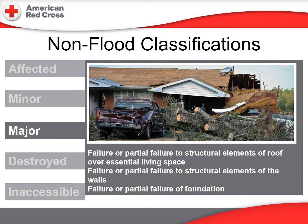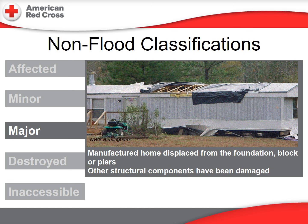The home in this photograph has sustained partial or complete failure of some of the structural elements of the roof and walls. This home would be classified as major damage. This manufactured home has been displaced from its foundation, and structural components of the roof have also been damaged — this home would also be classified as major damage.